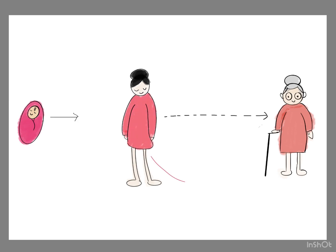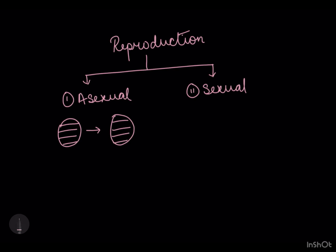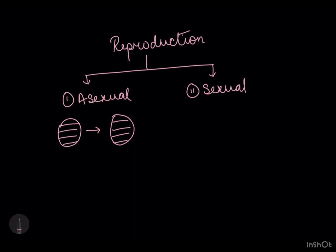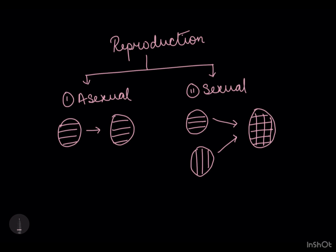Reproduction has two main types: asexual reproduction and sexual reproduction. Asexual reproduction is the process where offspring are produced from a single parent without gamete fusion. Sexual reproduction is the process where two parents mix their genetic material to produce offspring.